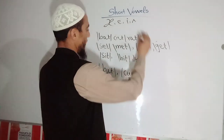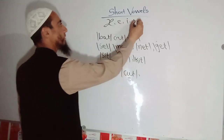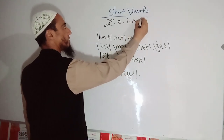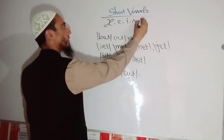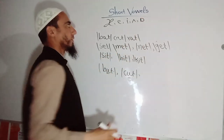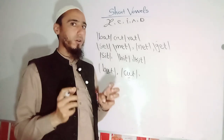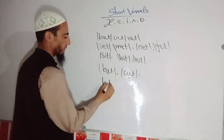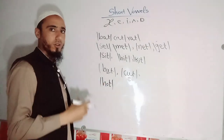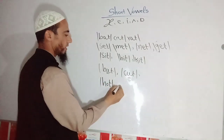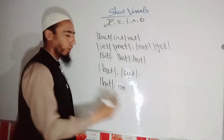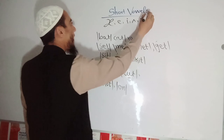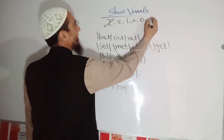And then we also have another one — this sign is used for the short /ɒ/ sound. For example: hot, hot; and on, on.